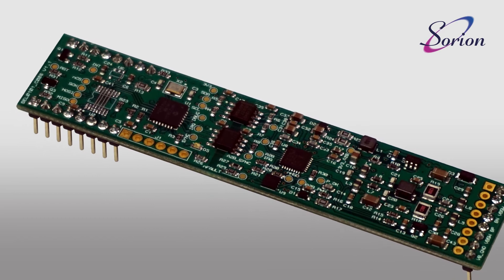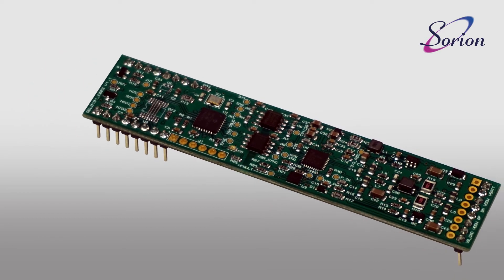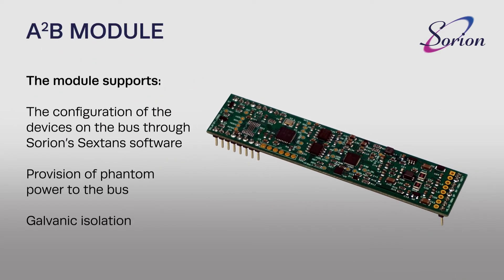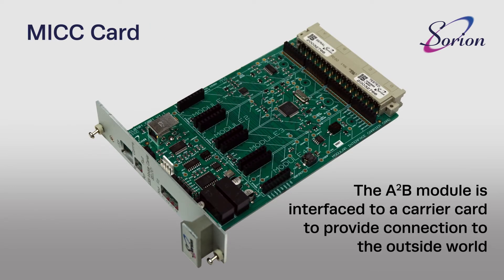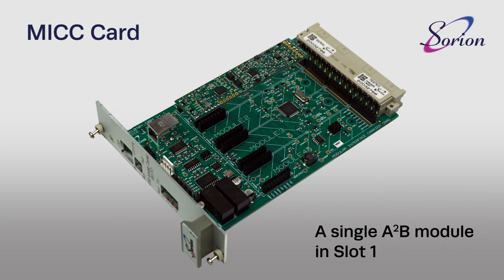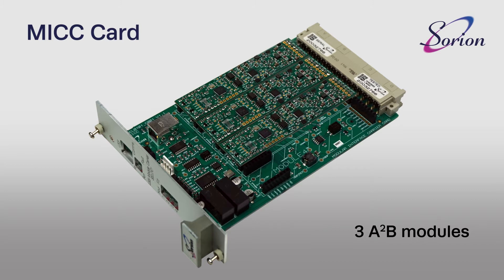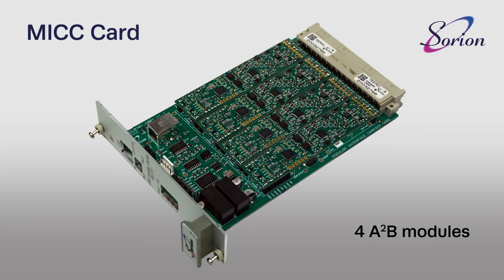The A2B module also supports provision of phantom power to the bus, allowing connection of both powered and unpowered modules. The A2B module itself is interfaced to a carrier card which provides connections to the outside world. A single carrier can accommodate up to four A2B modules, allowing interaction with four independent A2B buses at once.